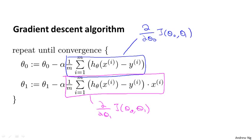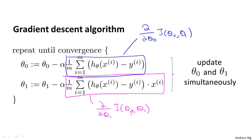Just as a quick reminder: when implementing gradient descent, you should be implementing it so that you update theta_0 and theta_1 simultaneously.